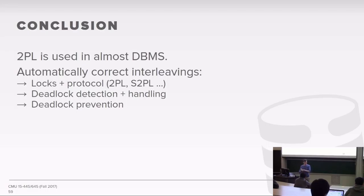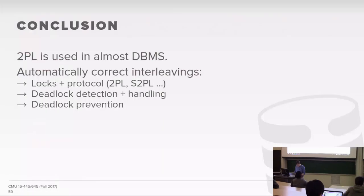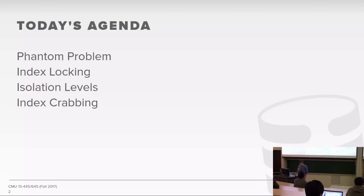That's pretty much it for two-phase locking. It's used in almost every single database management system—even ones that say they use multi-version concurrency control still use 2PL as the actual scheduling protocol. Two-phase locking is a dynamic protocol that doesn't know what transactions will do ahead of time. By itself, 2PL can guarantee conflict-serializable schedules but is susceptible to cascading aborts. Strict two-phase locking gives you conflict-serializable schedules without cascading aborts.